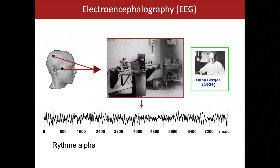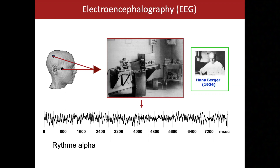EEG is almost 100 years old. It was in 1926 that Hans Berger in Germany performed the first recordings of brain electrical activity using two electrodes — one over the posterior brain areas and one as a reference electrode in front of the ear. He recorded what we now well know as the alpha rhythm: the oscillatory activity between eight and 12 cycles per second that is typical of the awake brain's posterior regions.